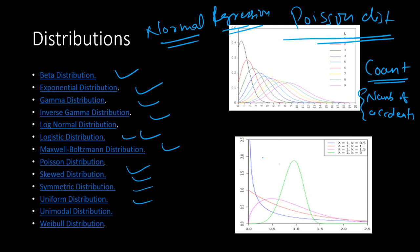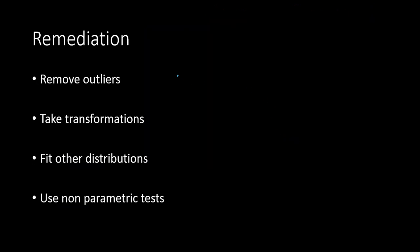Then there is the Weibull distribution, which applies to survival time data — for example, how long a patient survives after an operation. That kind of data will follow this type of distribution. We need to look at which distribution your data fits, try all kinds of distributions, and apply the appropriate regression for that.